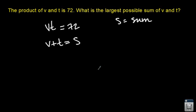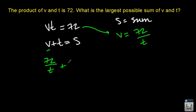We've got two variables, which means that we need to use both of these equations in order to find one of the variables. I'm going to solve for v. I'm going to say v equals 72 divided by t, so I just divided by t on both sides. And everywhere I see v here, I'm going to put in 72 over t plus t equals s. So I just did a substitution here.